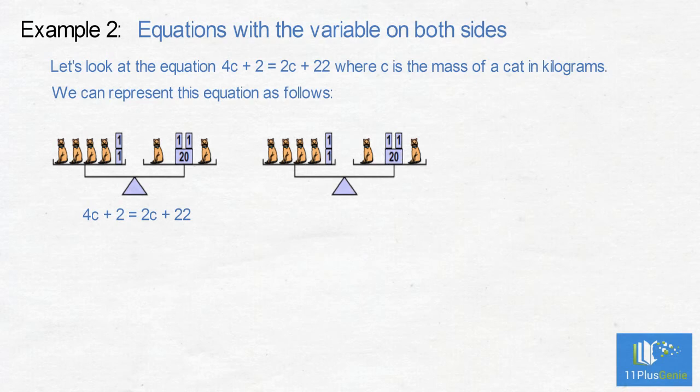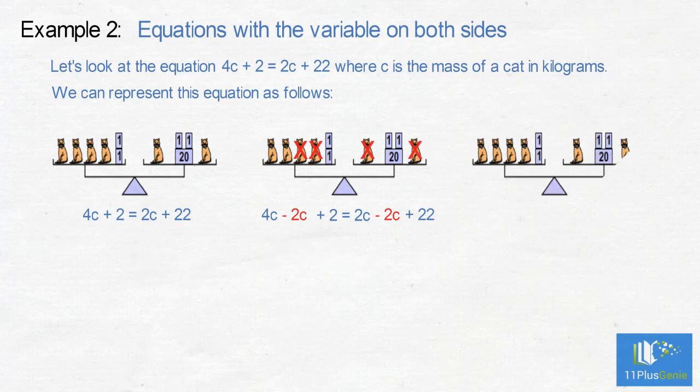We first need to get the cats on only one side of the balance. We take the 2 cats on the right hand side off. To keep the scale balanced we must take 2 cats off from the left hand side. This gives us 4c take away 2c add 2 which equals 2c take away 2c add 22. We can now see that we have 2c plus 2 equals 22.